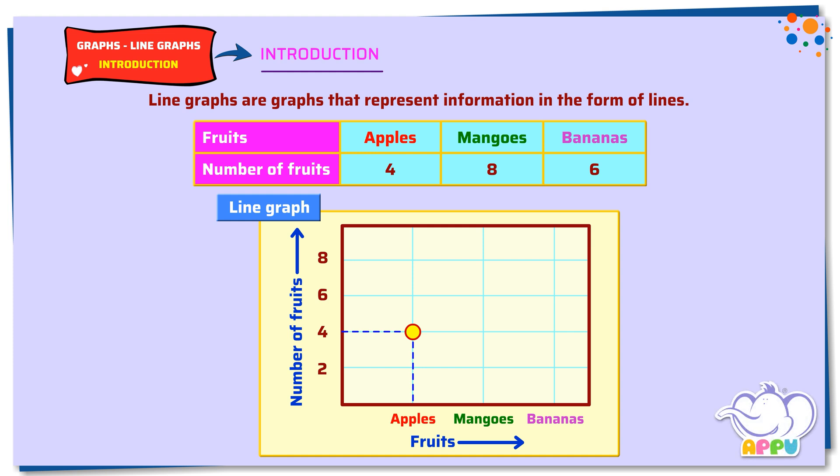The dot for mangoes is placed corresponding to eight. So we have eight mangoes. The dot for bananas is placed corresponding to six. So we have six bananas.